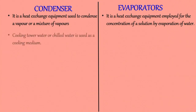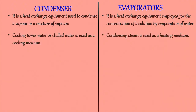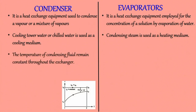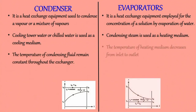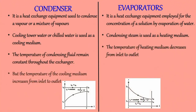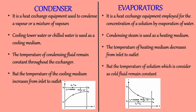In a condenser, cooling tower water or chilled water is used as a cooling medium. In an evaporator, condensing steam is used as a heating medium. A condenser involves the removal of latent heat; hence the temperature of the condensing fluid remains constant throughout the exchanger, while the temperature of the cooling medium increases from inlet to outlet. But in an evaporator, the temperature of the heating medium decreases from inlet to outlet, and the temperature of the solution — considered as the cold fluid — remains constant.